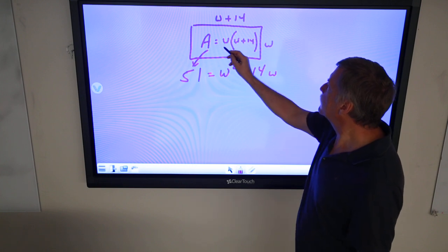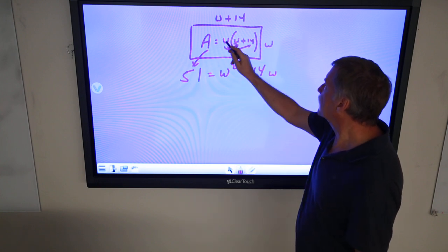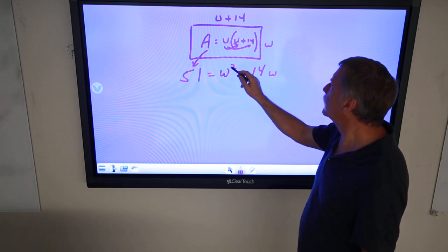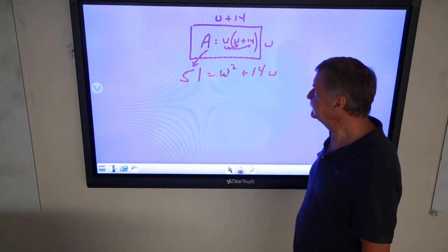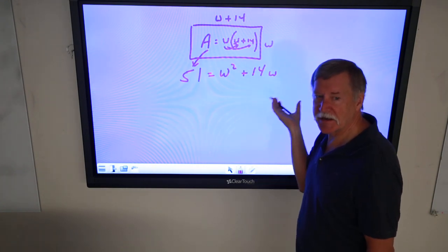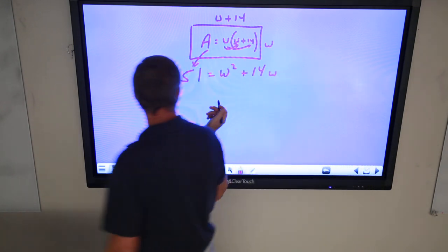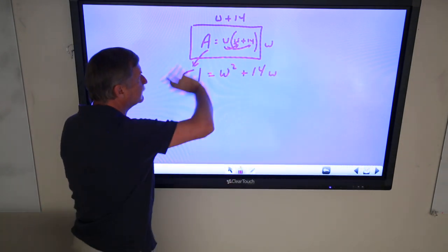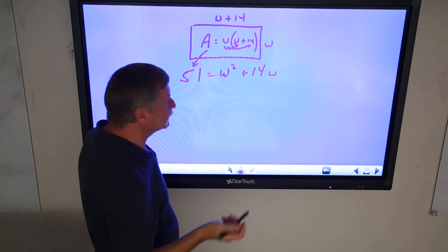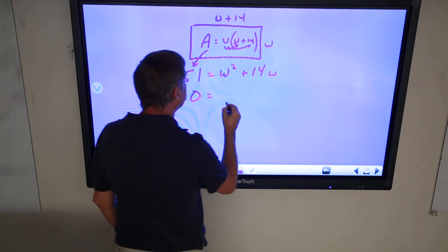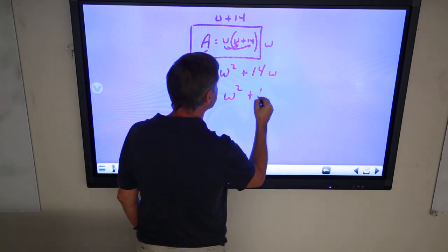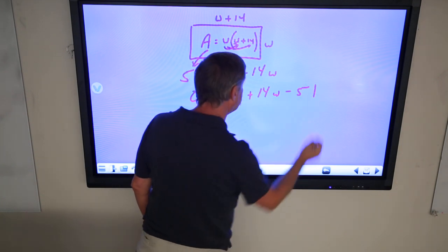And if I distribute the W, I get W times W, W squared plus 14W. And here I've got a quadratic equation staring at me in the face. So, I'm going to move everything over and make it equal to 0. So, 0 equals W squared plus 14W minus 51.